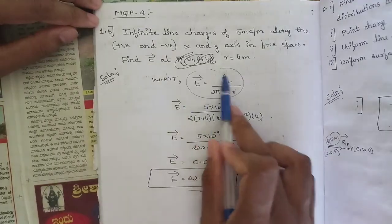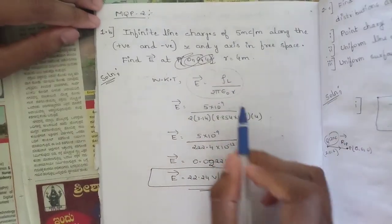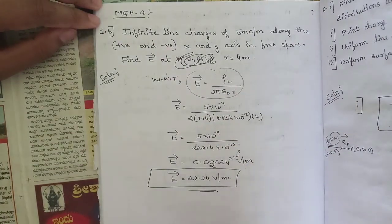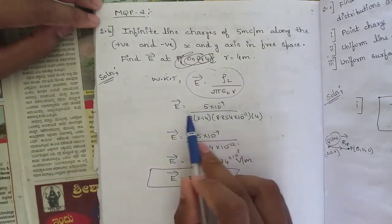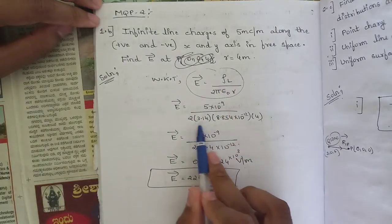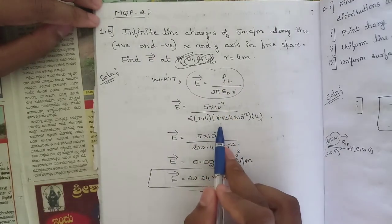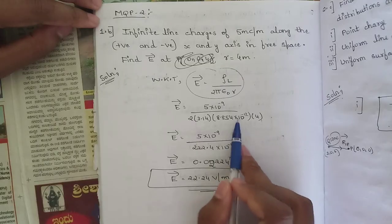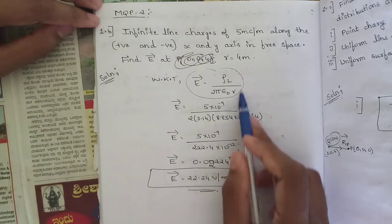Substituting the values: ρl is 5 nanocoulombs per meter, so 5 into 10 to the power minus 9. The denominator is 2 into π, which is 3.14, into ε₀, which is 8.854 into 10 to the power minus 12 farads per meter.